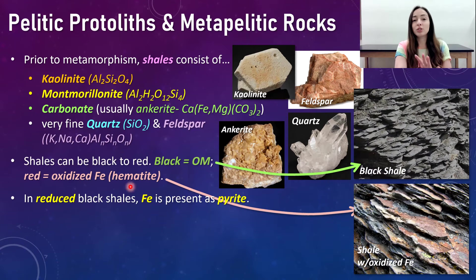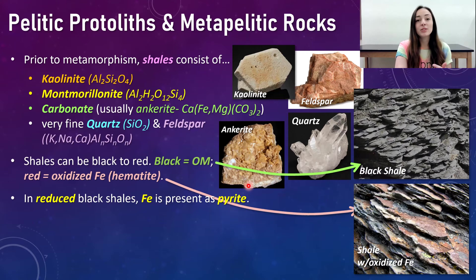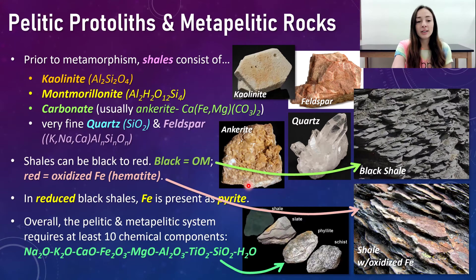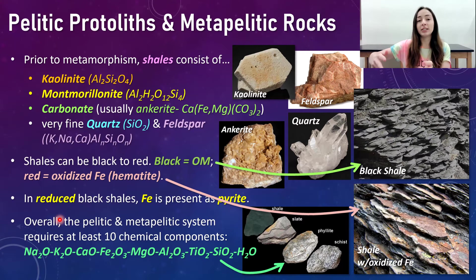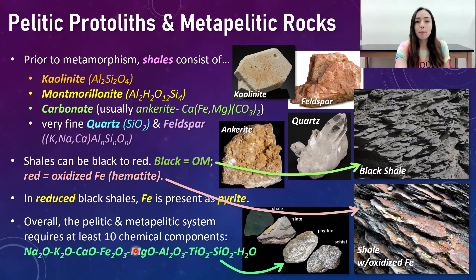In black shales where there's no red, it's reduced because there's no oxidized minerals like iron. In that case, the iron is present as pyrite or reduced iron sulfide. Overall, if we had all of these components together of shales and eventually their metamorphic equivalents, pelitic and meta-pelitic systems require at least 10 chemical components: sodium, potassium, calcium, iron, magnesium, aluminum, titanium, silicon, and water.